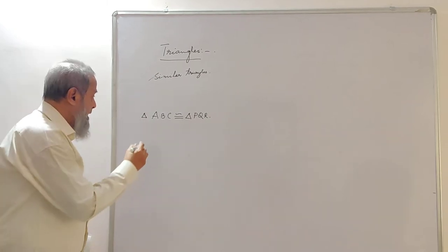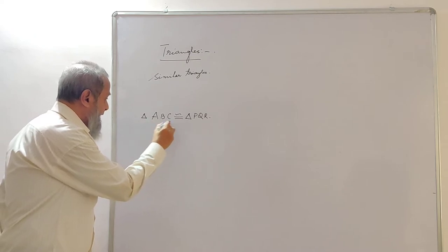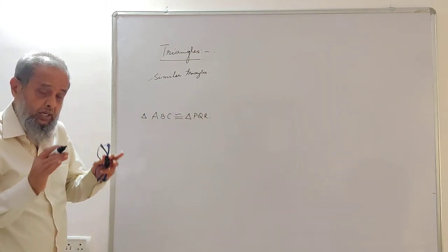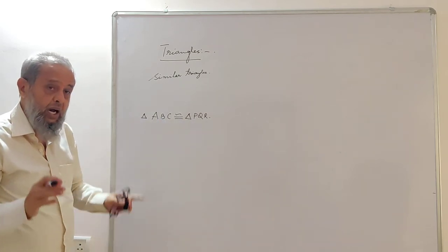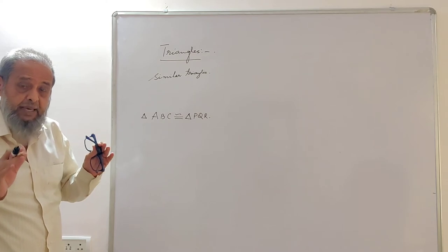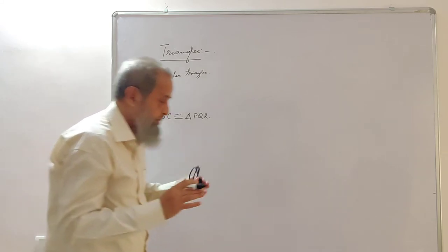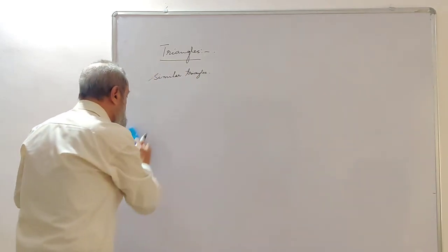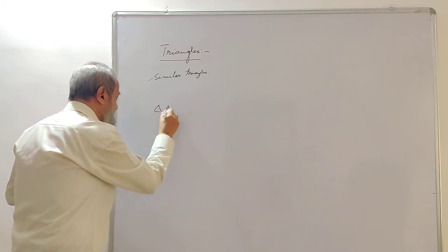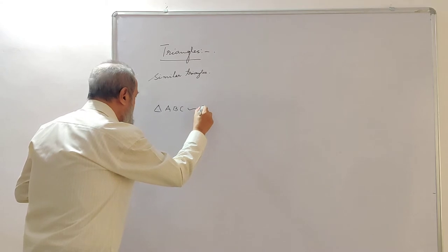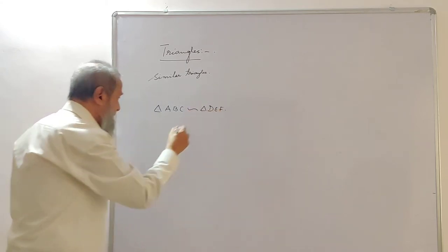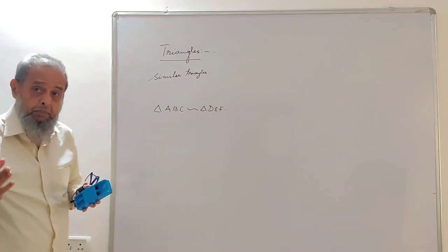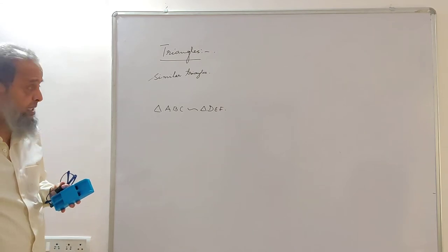Congruent means that triangles ABC and PQR have the same shape as well as the same size. But if they are of the same shape but not the same size, then they are said to be similar. If they are similar, we write triangle ABC is similar to triangle DEF using the similarity symbol. Two congruent triangles may be similar to each other, but two similar triangles need not be congruent — always remember that.